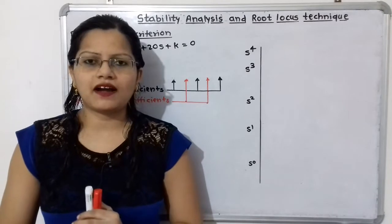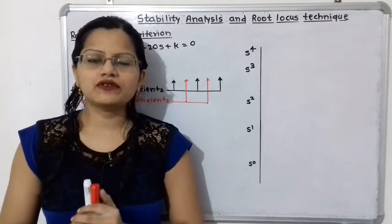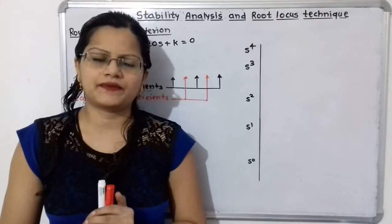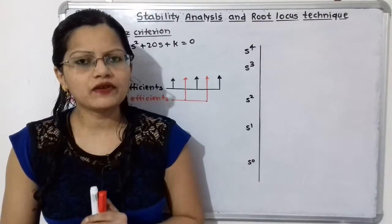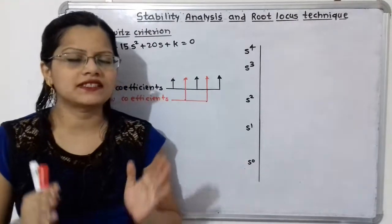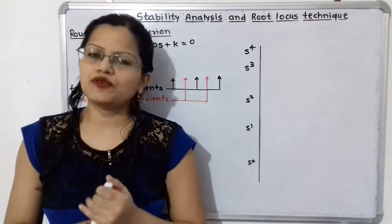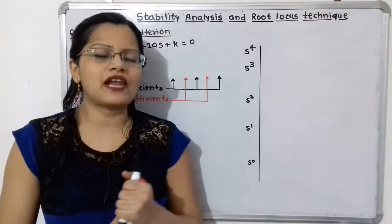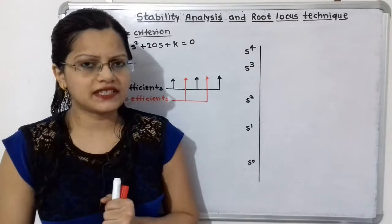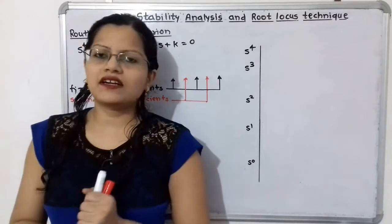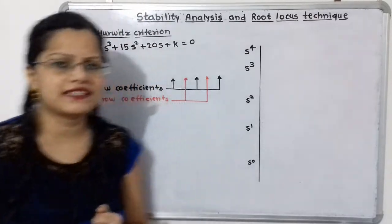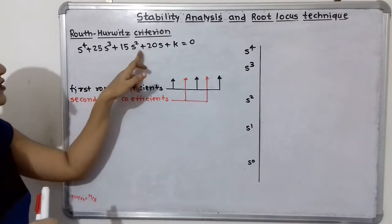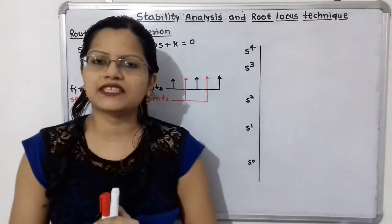Hello friends, this is Priyanka. Today we are going to solve a problem on Stability Analysis. In this video, we are going to determine what is the range of K for the system to be stable. We are also going to determine what is the value of K for the system to be marginally stable. Let us first understand the given characteristic equation: S raised to 4 plus 25S cubed plus 15S squared plus 20S plus K is equal to 0.